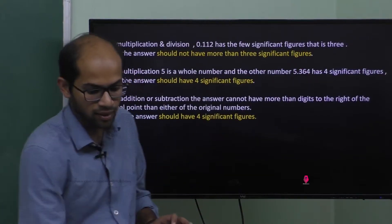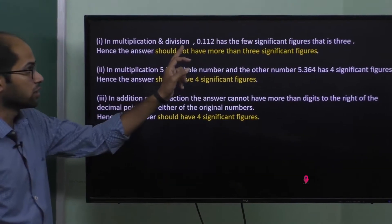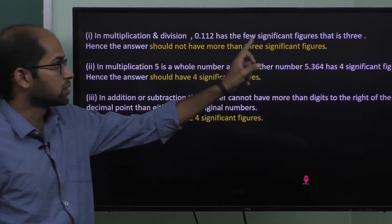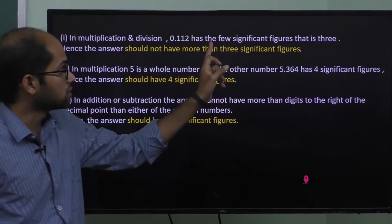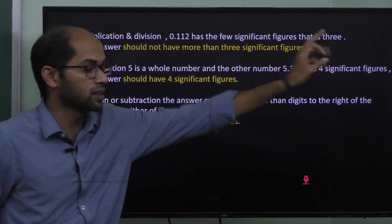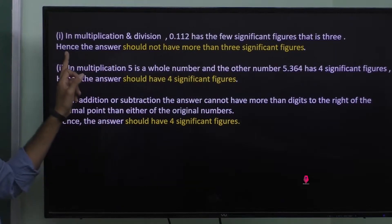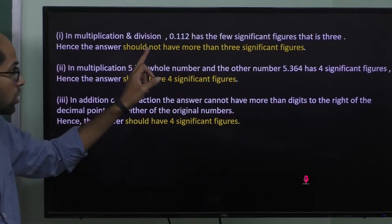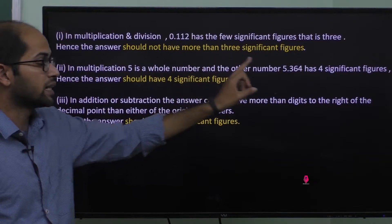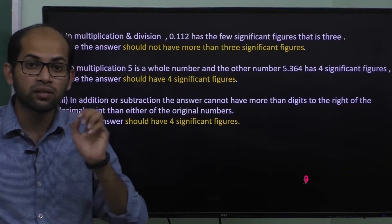In multiplication and division, 0.112 has the fewest significant figures. Hence, the answer should not have more than 3 significant figures.